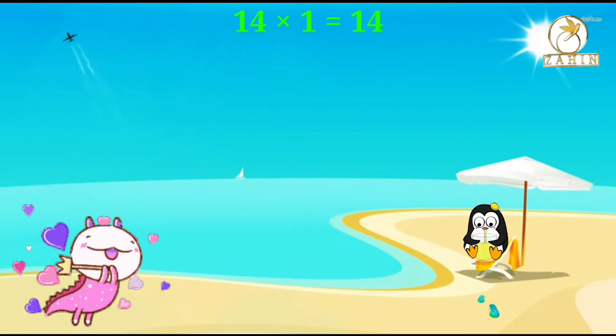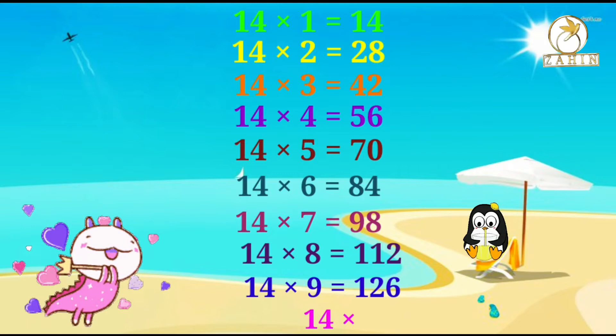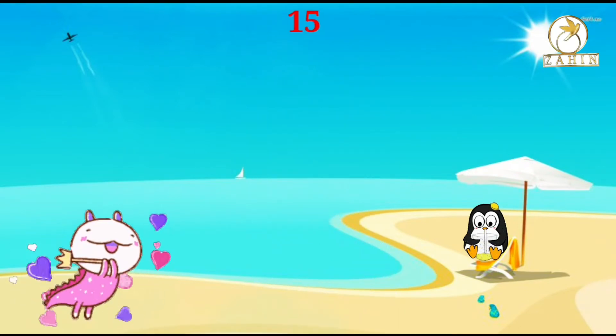14 times 1 equals 14, 14 times 2 equals 28, 14 times 3 equals 42, 14 times 4 equals 56, 14 times 5 equals 70, 14 times 6 equals 84, 14 times 7 equals 98, 14 times 8 equals 112, 14 times 9 equals 126, 14 times 10 equals 140. 15 times 1 equals 15.